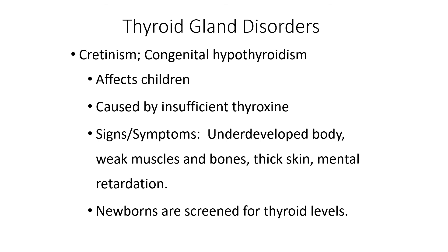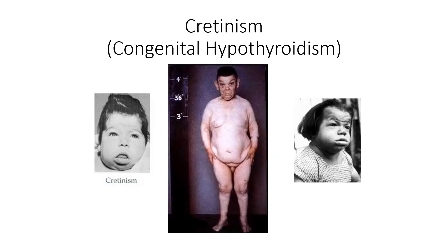The next condition is cretinism or congenital hypothyroidism. Nowadays this is commonly referred to as congenital hypothyroidism, and we now screen newborns on the day of their birth to see if they have adequate levels of thyroxine — if they don't, they'll begin treatment that day. If left untreated in children, it can cause underdeveloped body, weak muscles and bones, thick skin, and mental retardation. We tend to see dwarfism associated with this condition, but all of this can be helped if the person is given enough thyroxine as a treatment. The man in the middle has around a four-foot range of height, illustrating what happens when someone grows up without adequate levels of thyroxine.